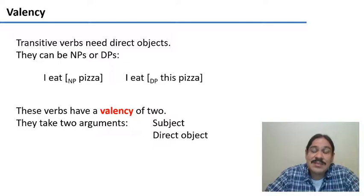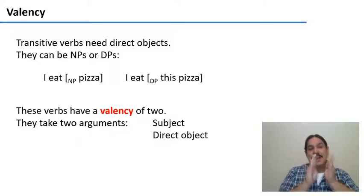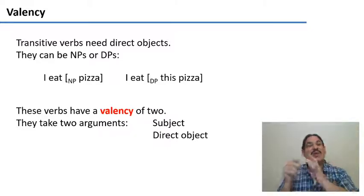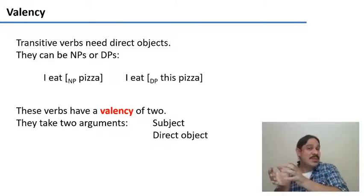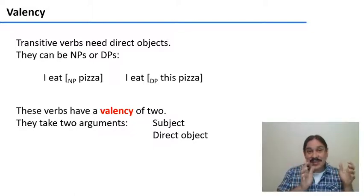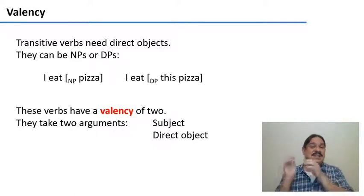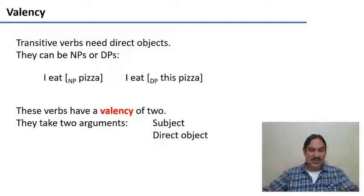We've seen transitive verbs take both noun phrases or determiner phrases as direct objects. In 'I eat pizza,' the direct object is a noun phrase. In 'I eat this pizza,' it's a determiner phrase.